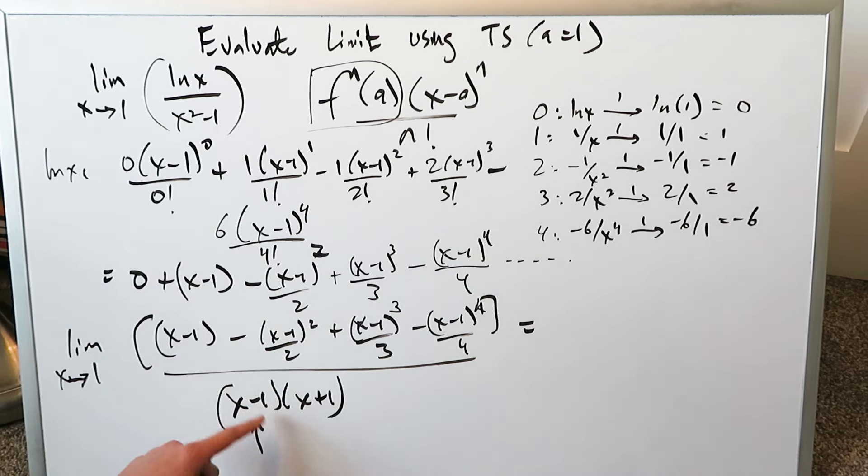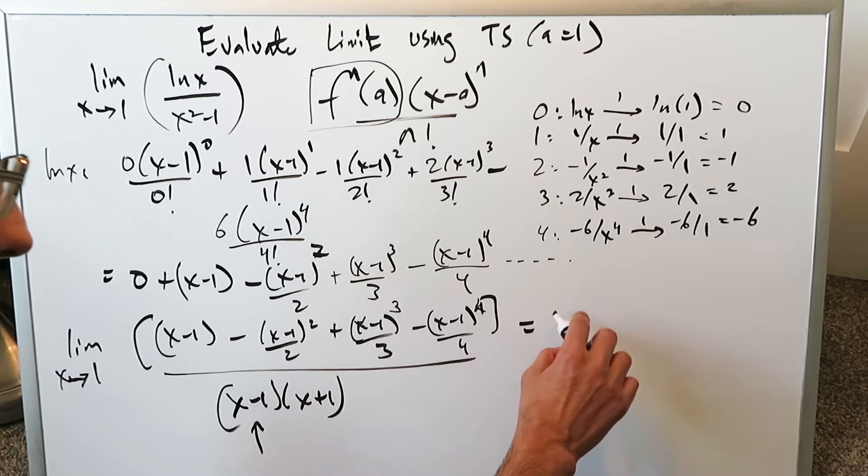This right here is the term which is creating a 0 in the denominator and leading to a problem. Remember x equals 1, 1 minus 1 is 0. If you eliminate this term, you're left with a positive term here only and you can never have an indeterminate limit form anymore.